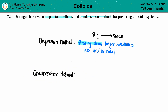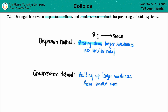Since dispersion method is about taking big molecules and going to small ones, condensation — remember they are opposites — we're not going to be breaking down, we're going to be building up. Condensation method is building up larger substances from smaller ones. We take our smaller molecules or ions and put them together to make larger ones: small to big.